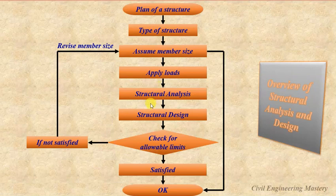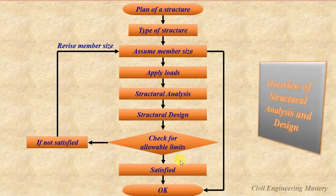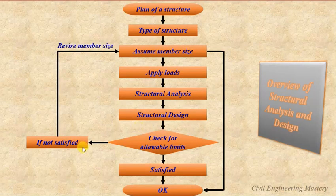We determine what loads are coming on the structure and apply them. Once the loads are applied, we start analyzing the structure. From the analysis, we get the internal forces. Using the internal forces, we design the structure. After designing, we check for the allowable limits based on codes and standards. If the allowable limits are satisfied, then the member size we assumed is acceptable.